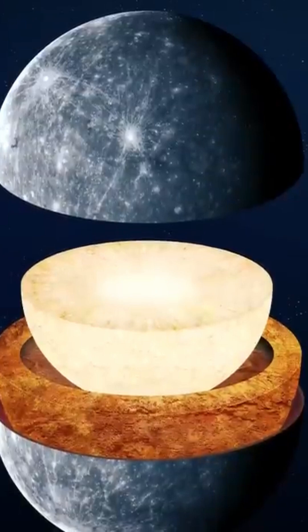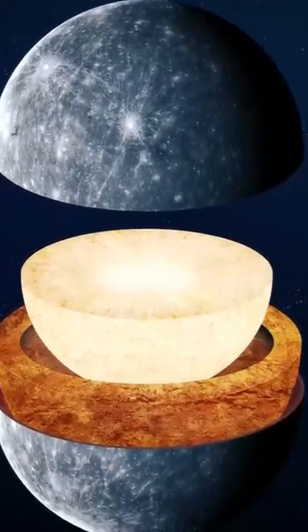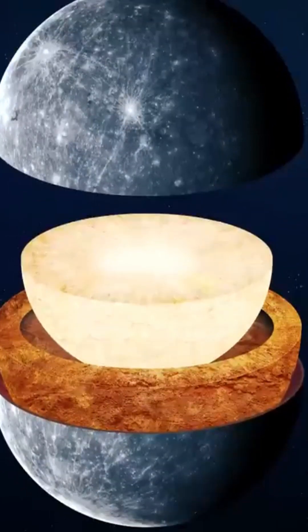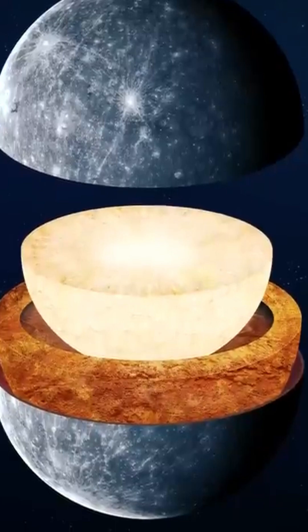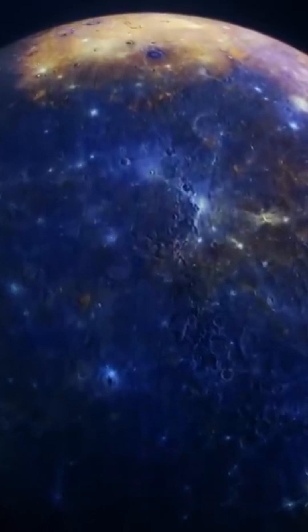Its core, composed of iron and nickel, is particularly imposing, with a radius of over 2,000 kilometers, or 1,300 miles, representing 85% of the planet's radius and over 40% of its volume.